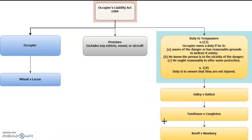Another useful case on the 1984 Act is Tomlinson v Congleton, which we also looked at under the 1957 Act in the context of warning signs — specifically whether it was necessary to give a warning sign next to a pond where people swam and where the claimant was injured. This case is useful here because a duty under the 1984 Act may be discharged by giving a warning or discouraging others from taking the risk, under section 1(5) of the 1984 Act. However, unlike the 1957 Act, there is no obligation for the warning to enable the visitor to be reasonably safe.